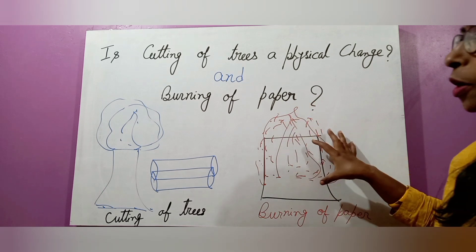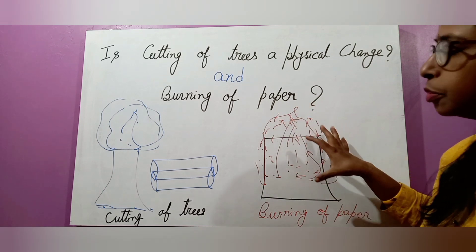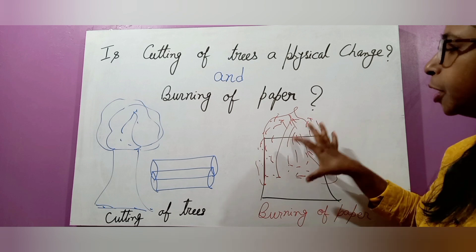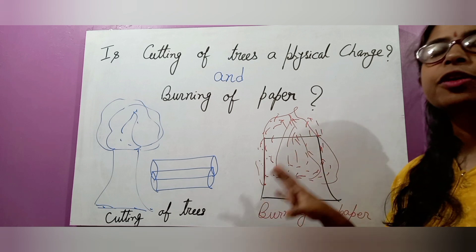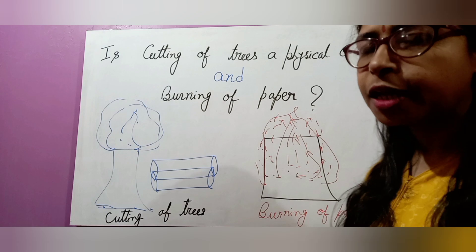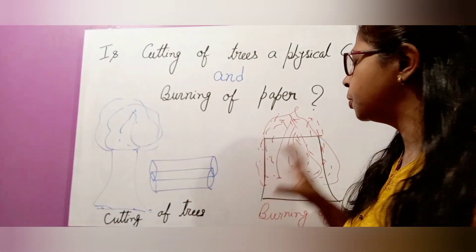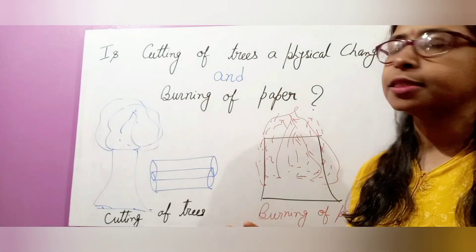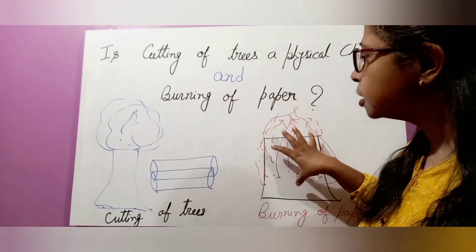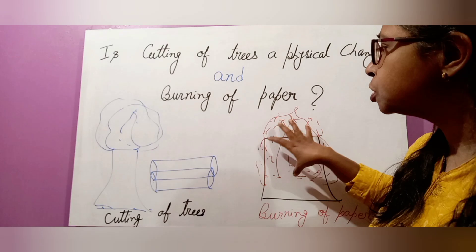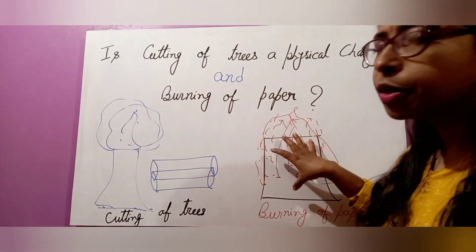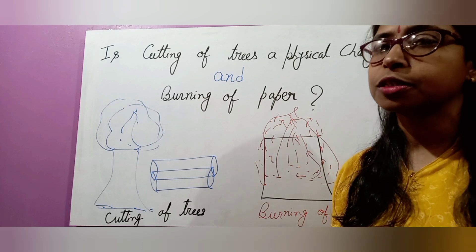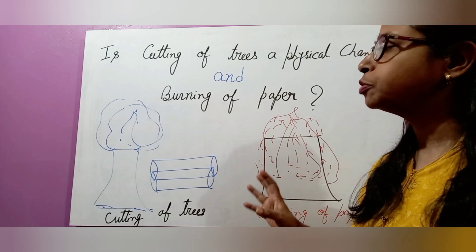But in the burning of paper, when we burn the paper, the composition of the constituent particles becomes changed. The paper converts into different types of gases like carbon dioxide, sulfur dioxide, water vapor, and the remaining amounts convert into some gases. So new substances form in burning of paper, but in cutting of trees, there are no new substances formed.